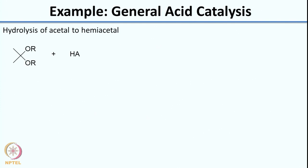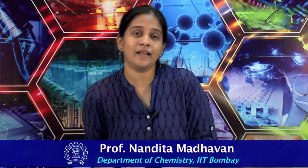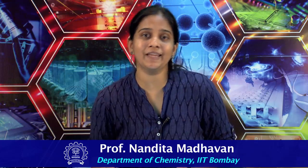Now suppose the same acetal hydrolysis reaction proceeds via general acid catalysis — how would you write that mechanism? Try this as homework. We will discuss it in the next lecture, including whether such a general acid mechanism is actually observed, since conventionally one might expect specific acid catalysis given the poor leaving group requiring protonation as the first step. We will meet again in the next class. Thank you.